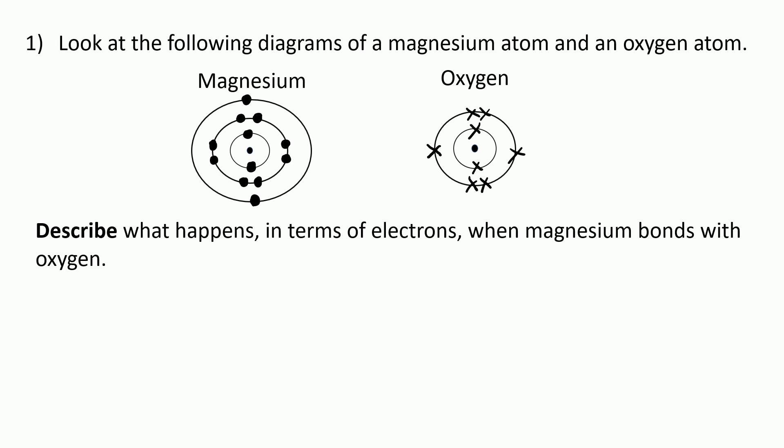The best way to tackle this question is to look at each atom in turn and describe what needs to happen to the electrons in order to get a full outer shell and be stable.